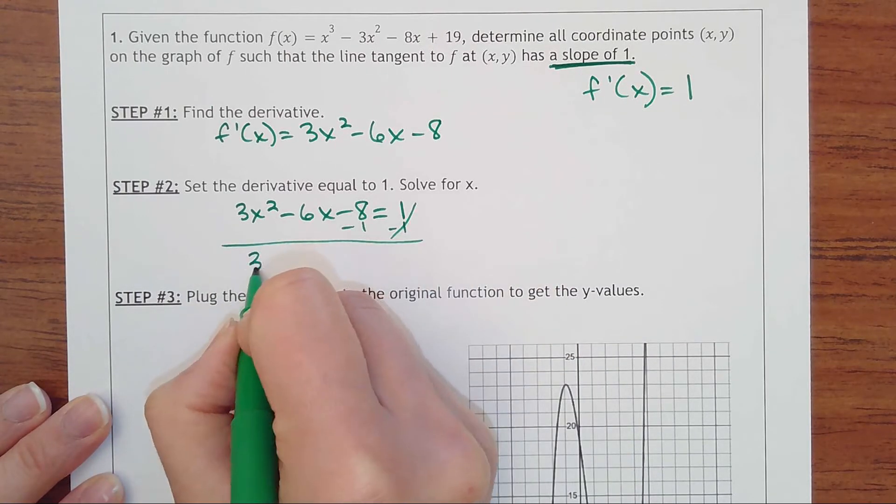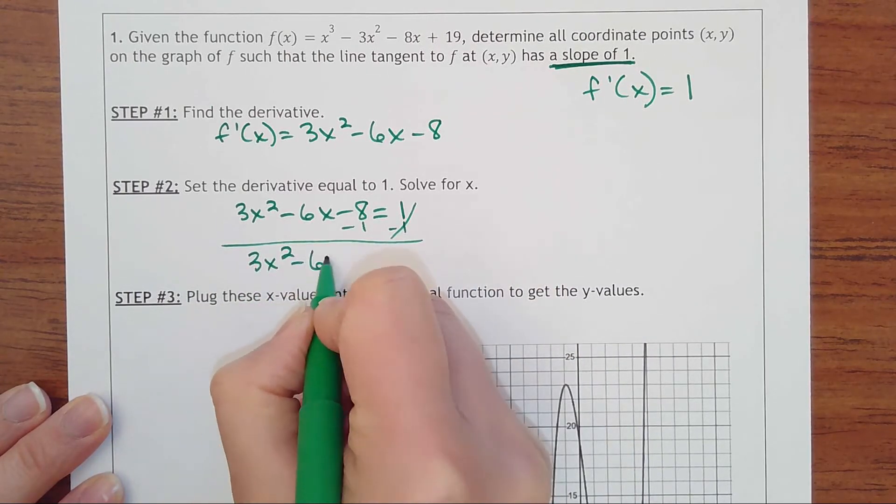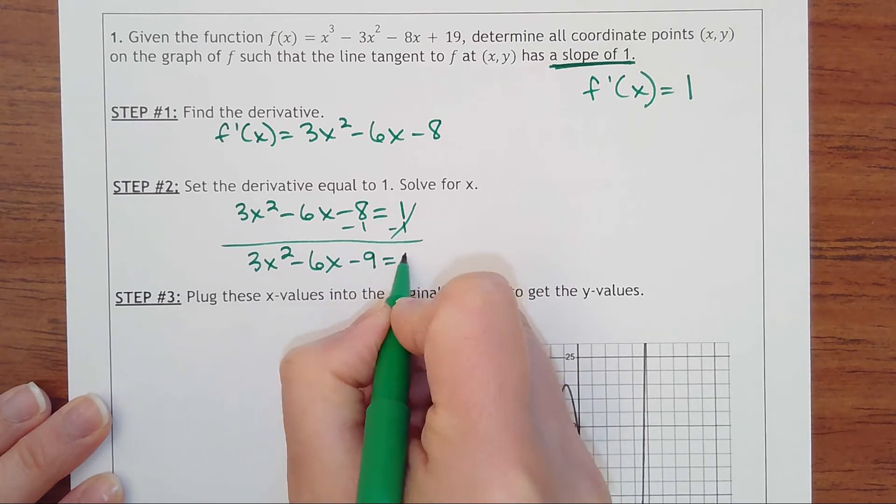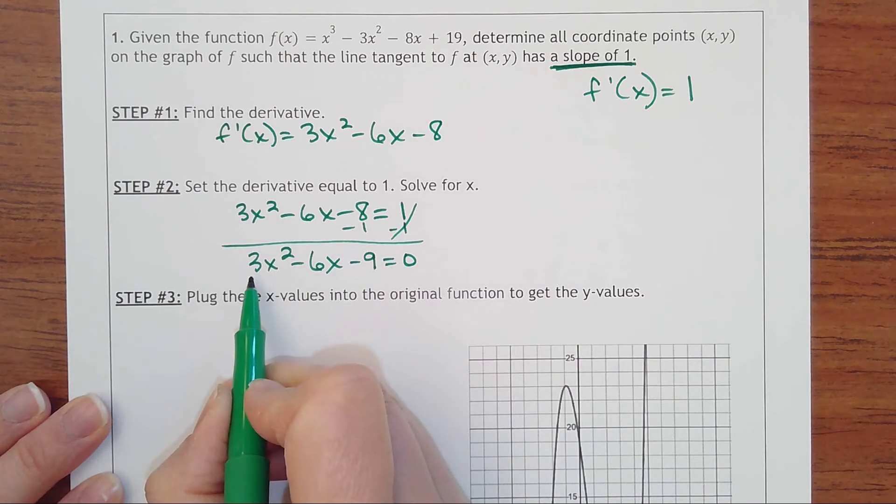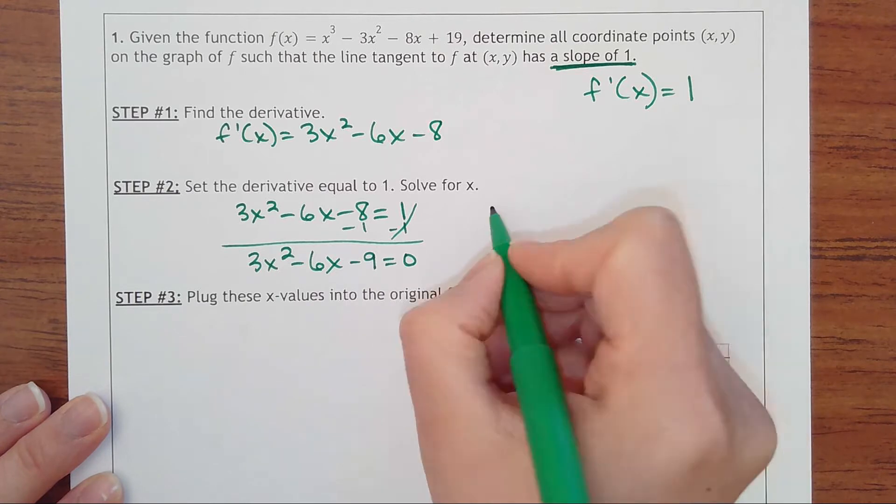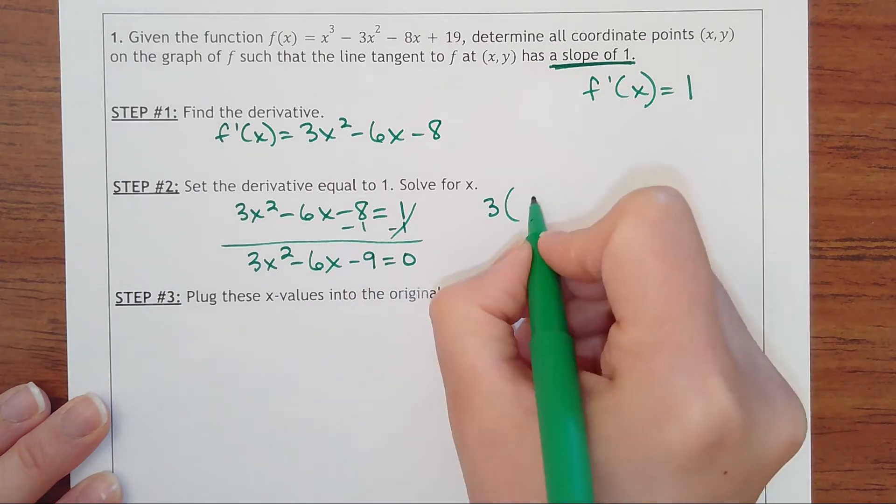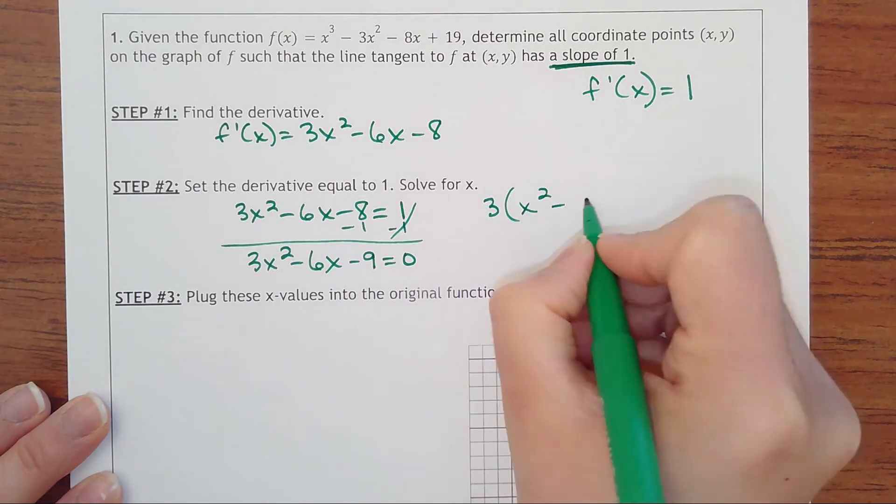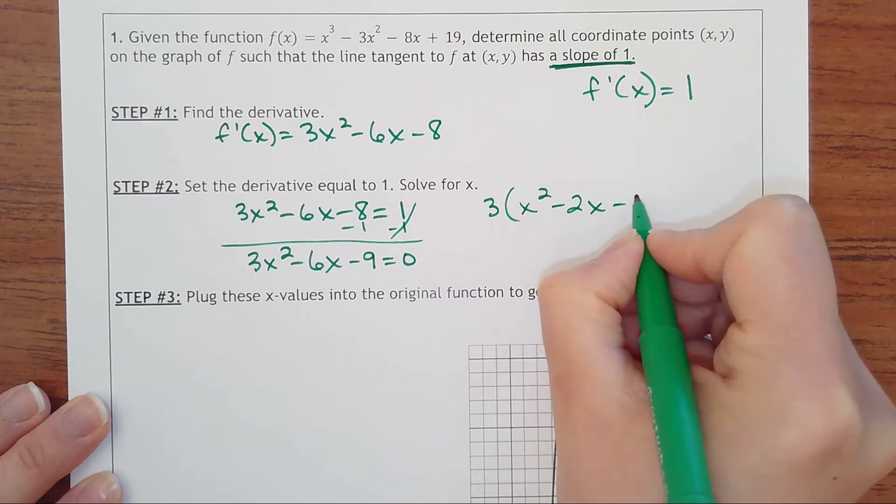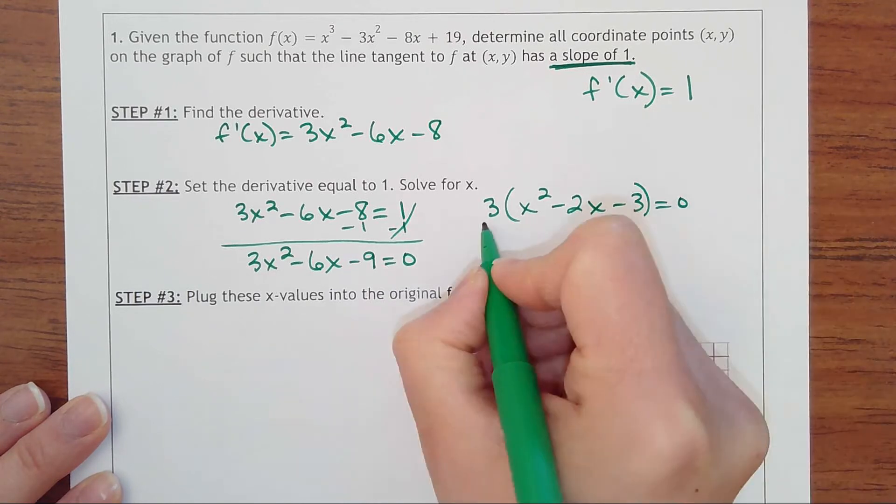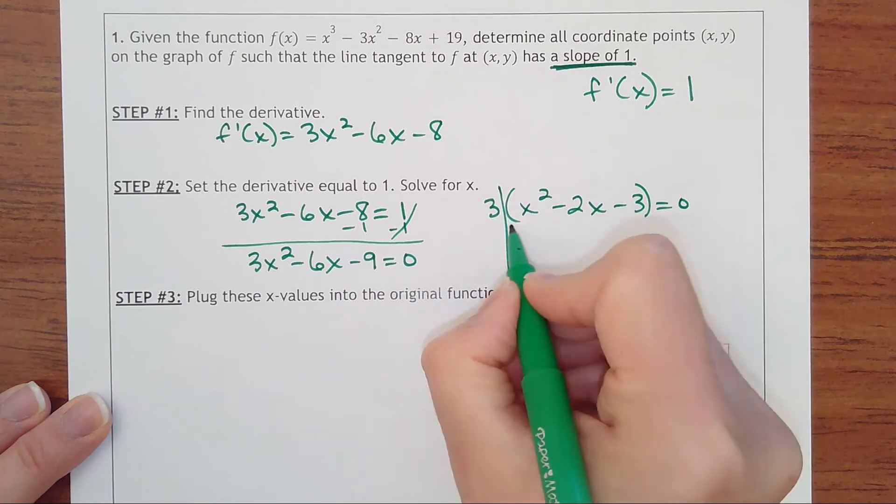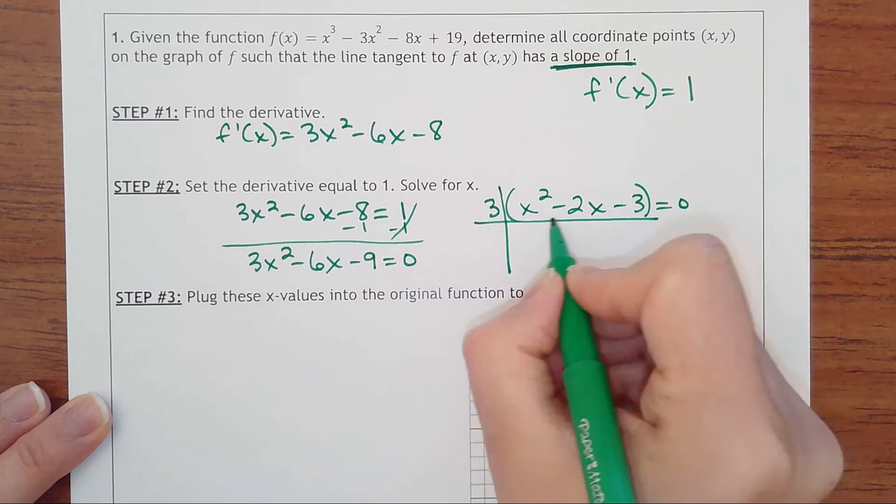Subtracting 1 from -8, I get 3x² - 6x - 9 = 0. The good thing is I can factor out a 3 from all terms, giving me 3(x² - 2x - 3) = 0. The 3 means nothing since it doesn't have an x, so I'm going to factor this further.